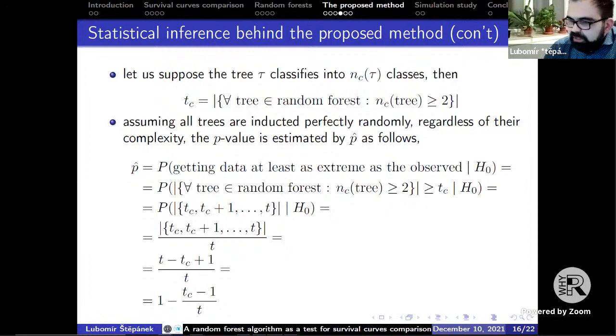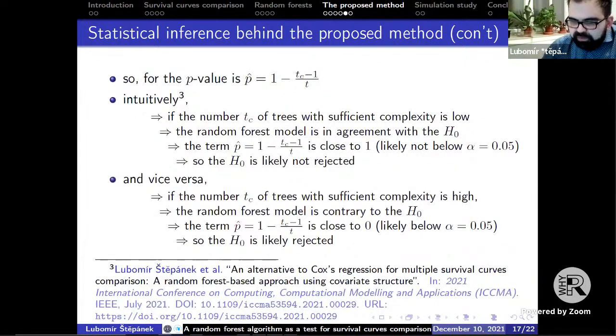In other words, this is equivalent to a situation that the number of trees in contradiction to the null hypothesis is Tc or Tc+1 or Tc+2 or even larger. By doing this arithmetic we derive the p-value is equal to the last fraction as we can see it. T is the number of all trees in the random forest. Intuitively, if the number Tc of trees with sufficient complexity, which means that they are contrary to the null hypothesis, in the random forest model is low, then the random forest model is in agreement with the null hypothesis and what it's claiming, and there are no differences between the survival curves. Also, the fraction for the p-value is close to 1.